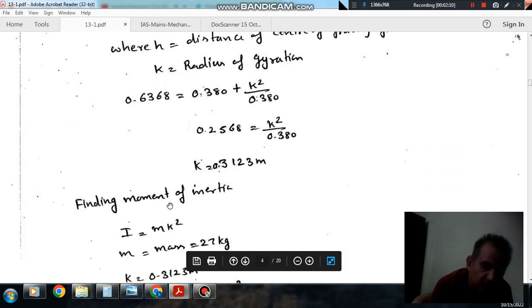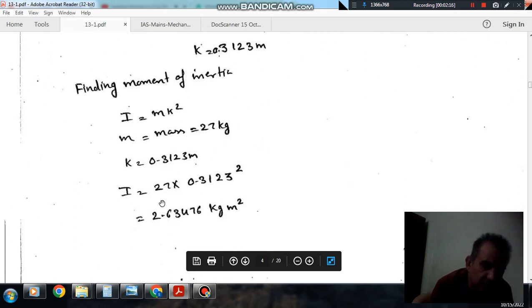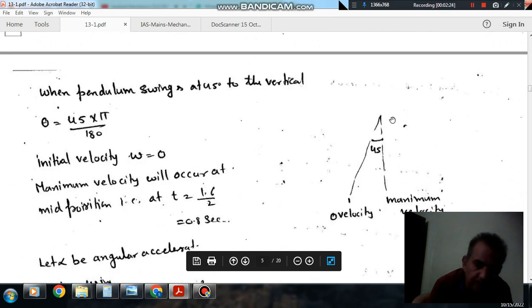From the radius of gyration, we can find out the moment of inertia of the pendulum about its own center as mk squared. So, that comes out as 2.63476 kilogram meter squared.